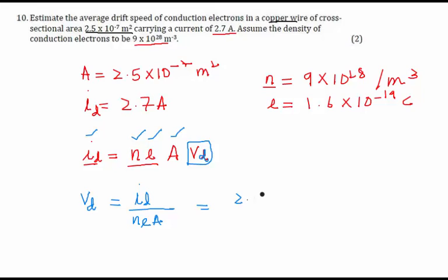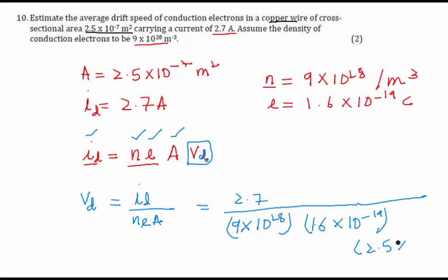When I calculate this, it would be 2.7 divided by 9×10²⁸ times 1.6×10⁻¹⁹ times 2.5×10⁻⁷, that is the area.